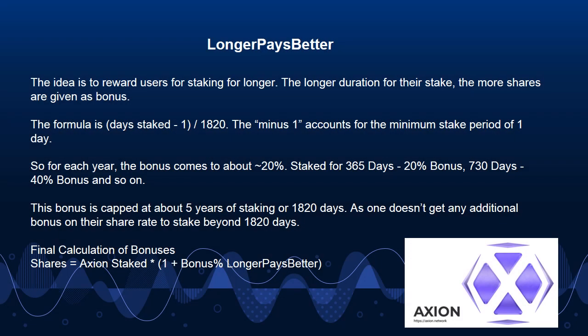Longer Pays Better. The idea is to reward users for staking for longer. The longer the duration of their stake, the more shares are given as a bonus. The formula is: days staked ^ (1/1820) minus 1. The minus 1 accounts for the minimum stake period of 1 day. So for each year, the bonus comes to about 20%. Staked for 365 days: ~20% bonus; 730 days: ~40% bonus, and so on. This bonus is capped at about 5 years of staking, or 1820 days, as one doesn't get any additional bonus on their share rate beyond 1820 days.